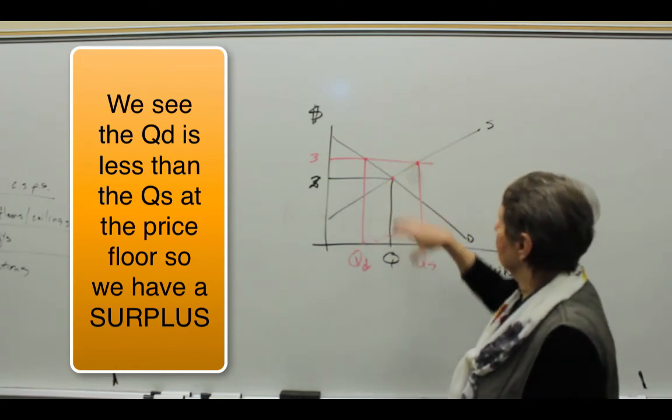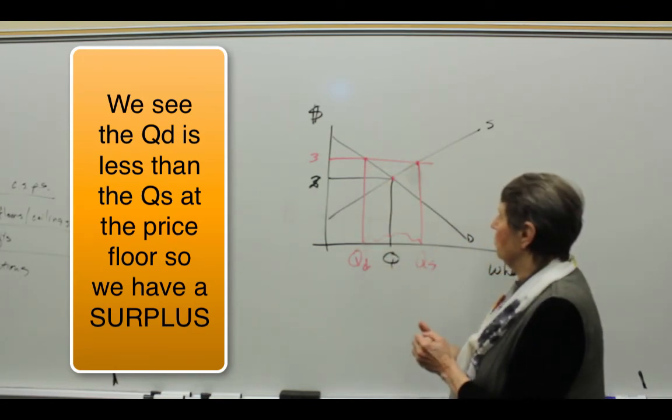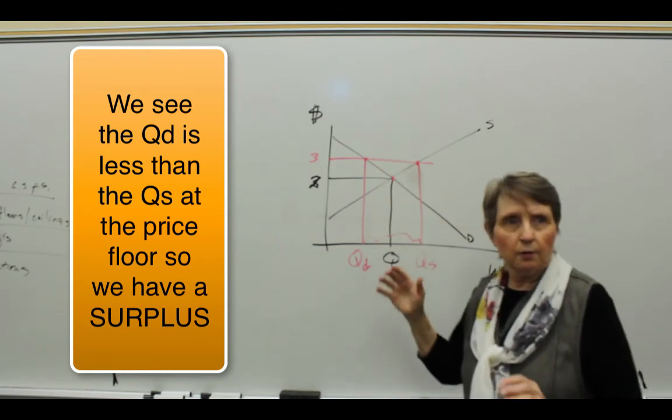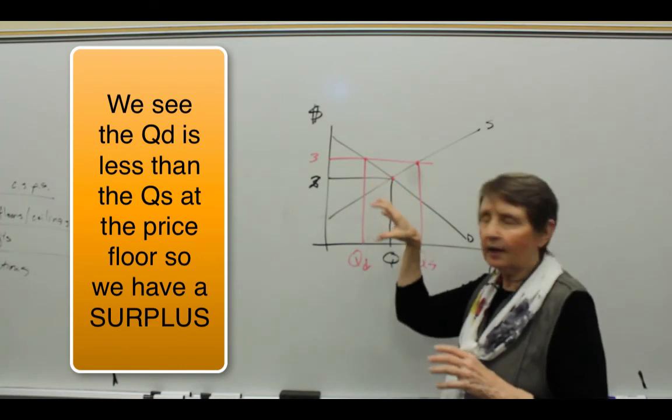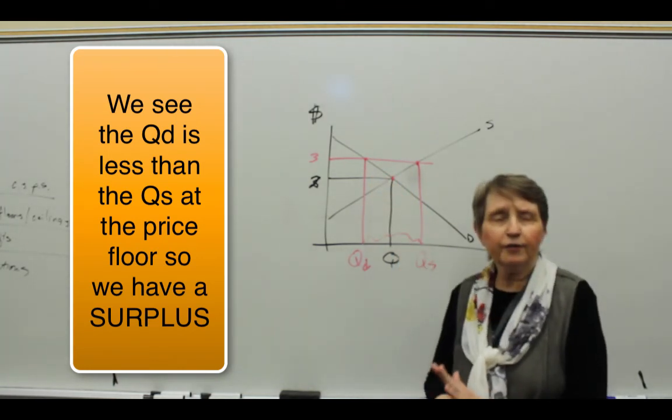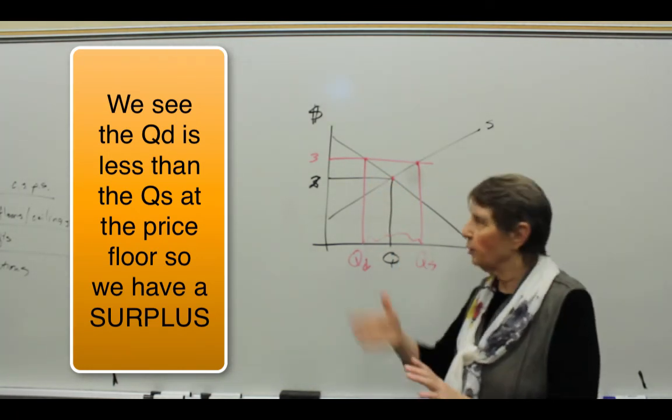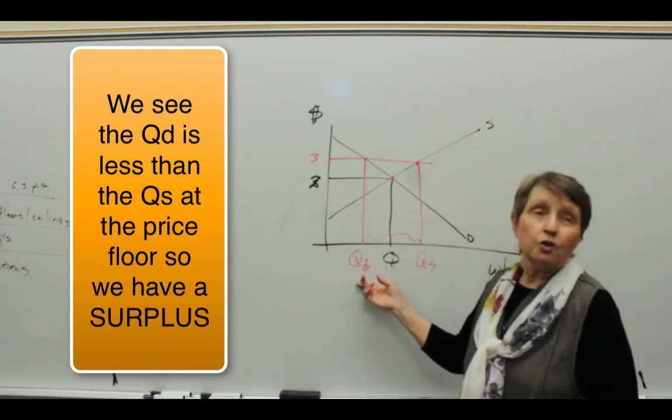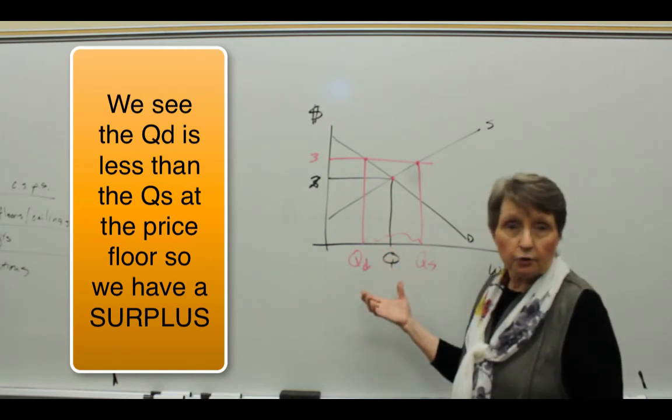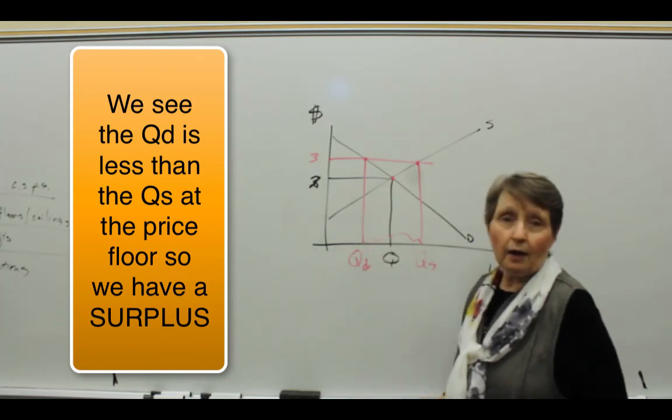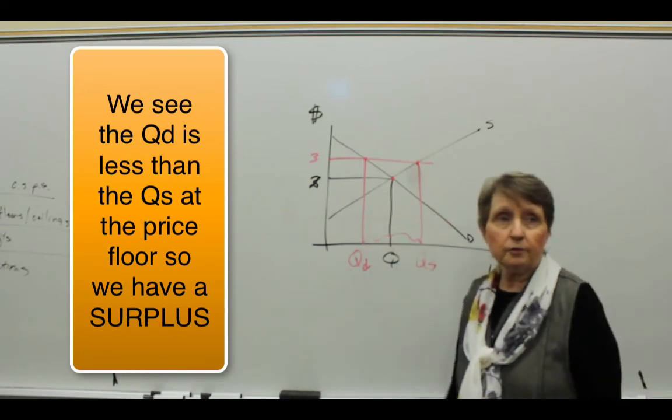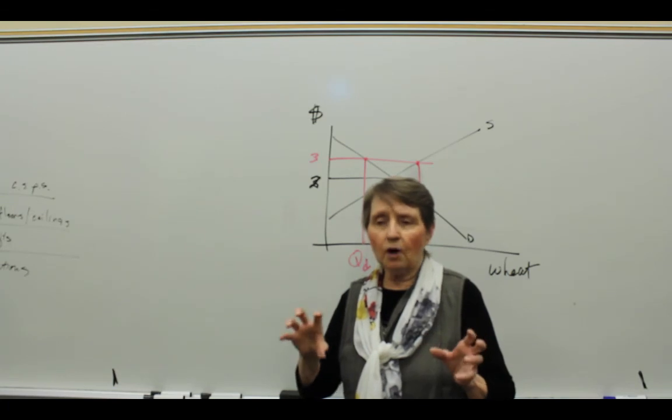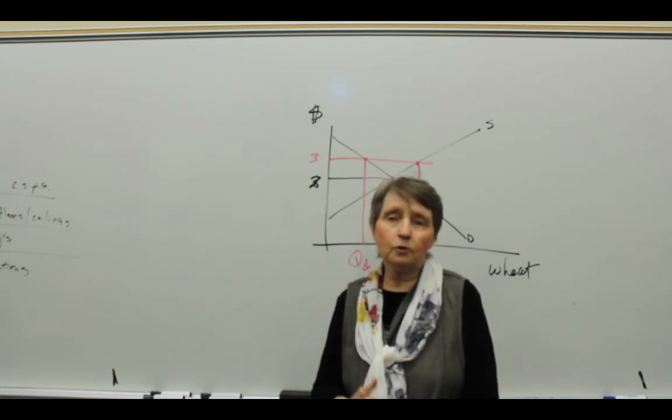And so what we are left with is a situation where altering the market with regulations that interfere with equilibrium don't often give us the result we're looking for. We're trying to help farmers here, and what we've done is we've hurt consumers because we've raised the price. Consumers now don't get as much wheat and they have to pay a higher price for it. And then we have all this surplus of wheat. So this is a situation where if you interrupt the flow of markets, it doesn't always give you the result that you intended.